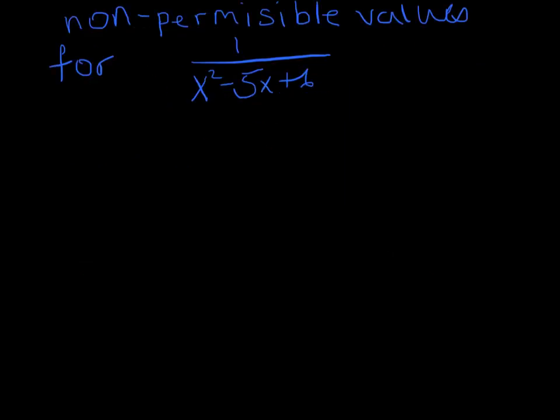Alright, so let's look at this example. We want to find the non-permissible values for x squared minus 5x plus 6. And again, that means what is going to make my denominator 0? So we need to solve for the x values that are going to make the denominator 0. So let's do that.